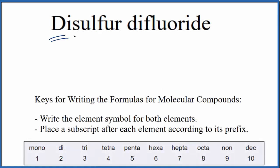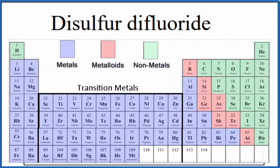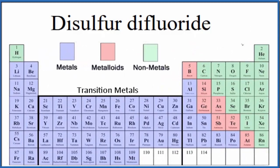To write the formula for disulfur-difluoride, we first need to determine what type of compound we have. So if we look at the periodic table here, broken up into metals, metalloids, and nonmetals.